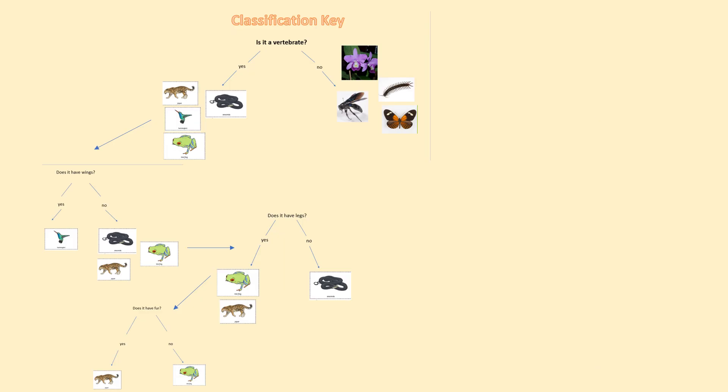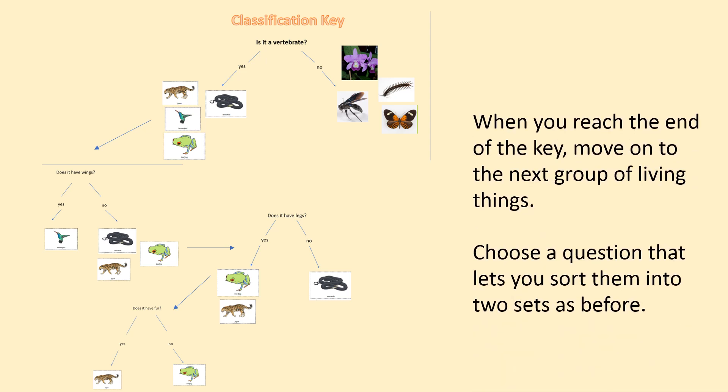Just one last minute — I really want everyone to get this right and to be able to do this independently. Don't rush through your work. For example: is it a vertebrate? Yes — jaguar. Does it have wings? No. Does it have legs? Yes. Does it have fur? Yes. You can see the similarities and differences with the characteristics. When you're evaluating your key, go down the path answering the questions and see where you end up. If you need any help, you can always email the Year 4 team. Good luck, everyone.